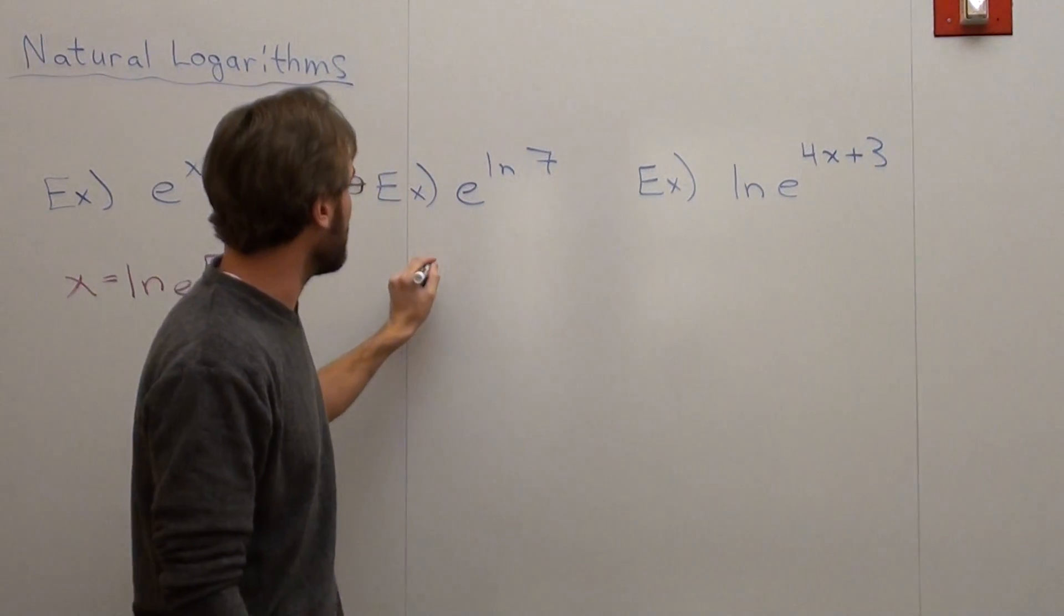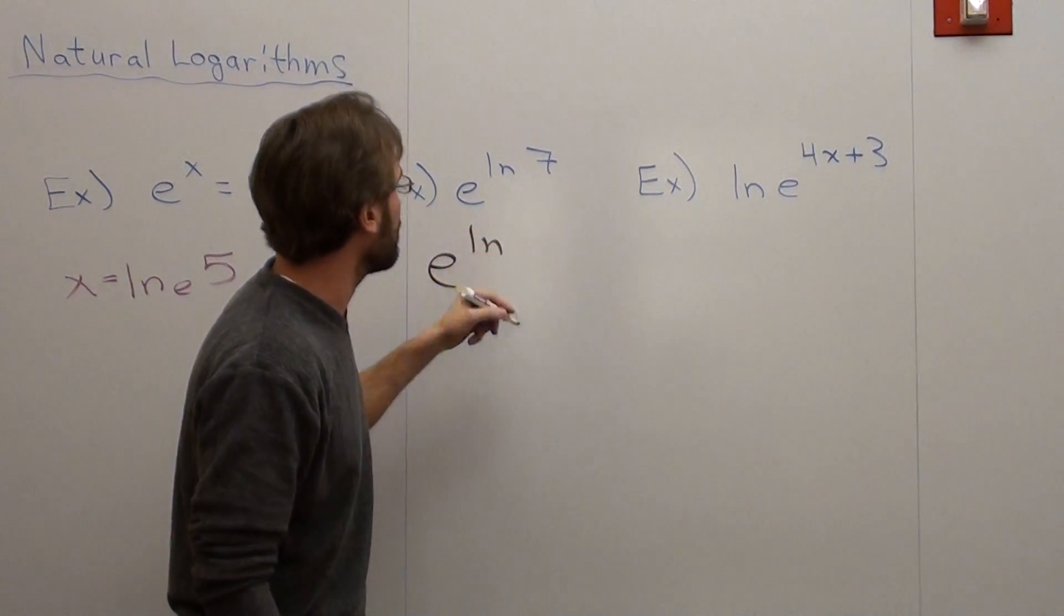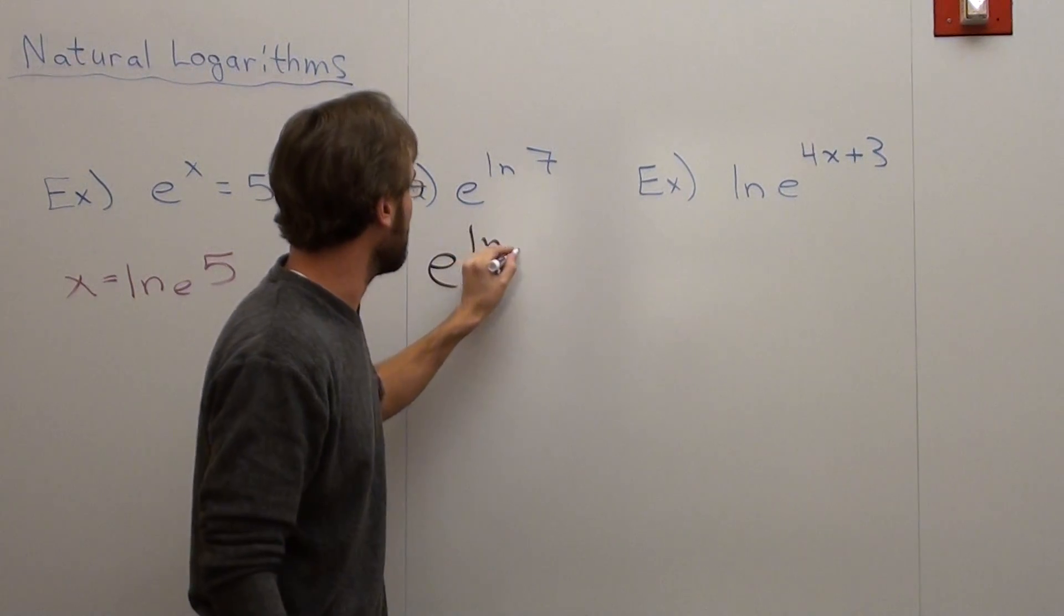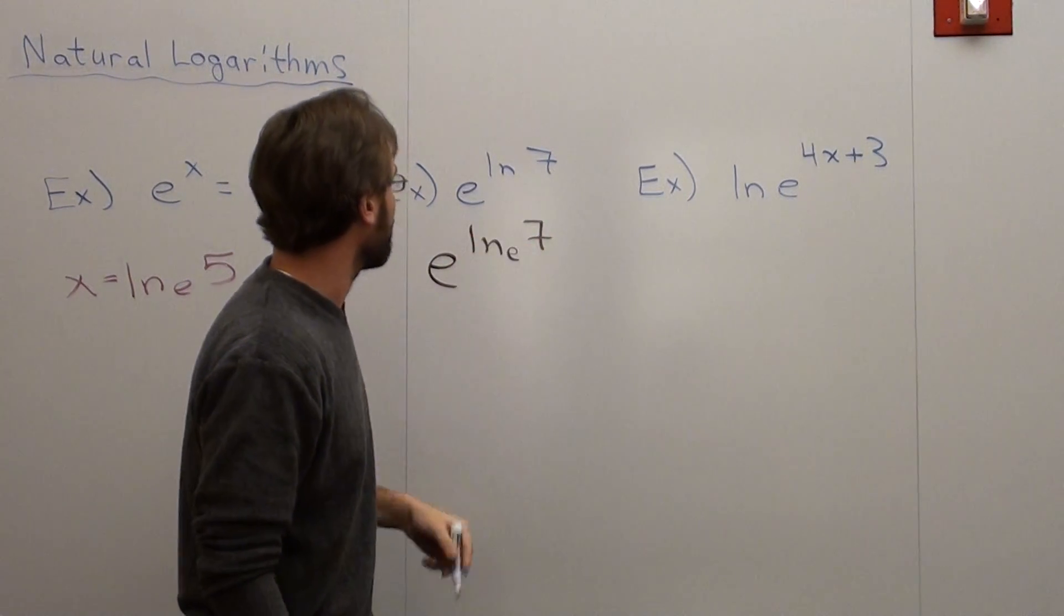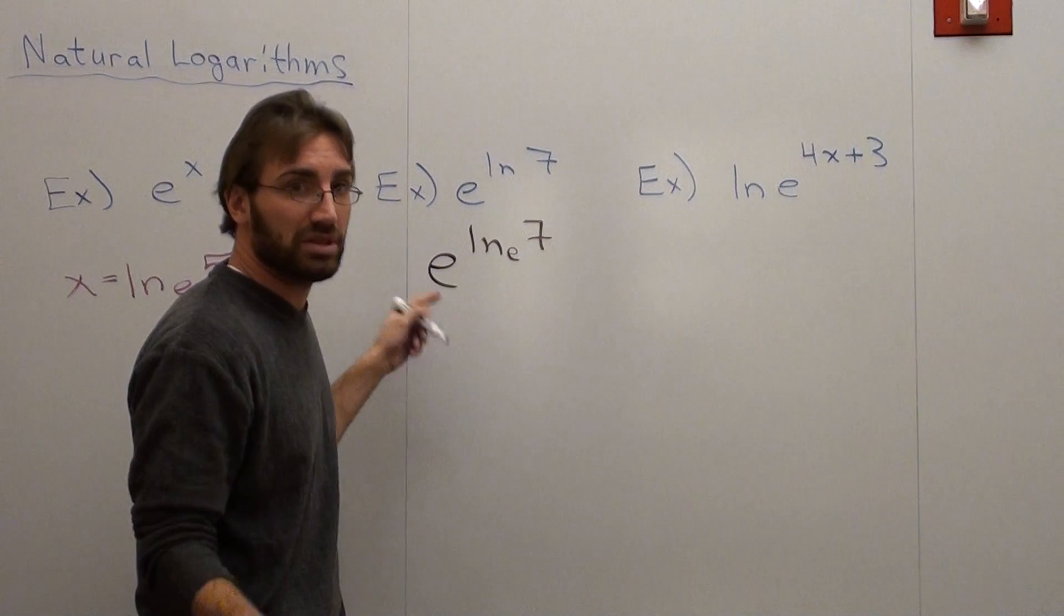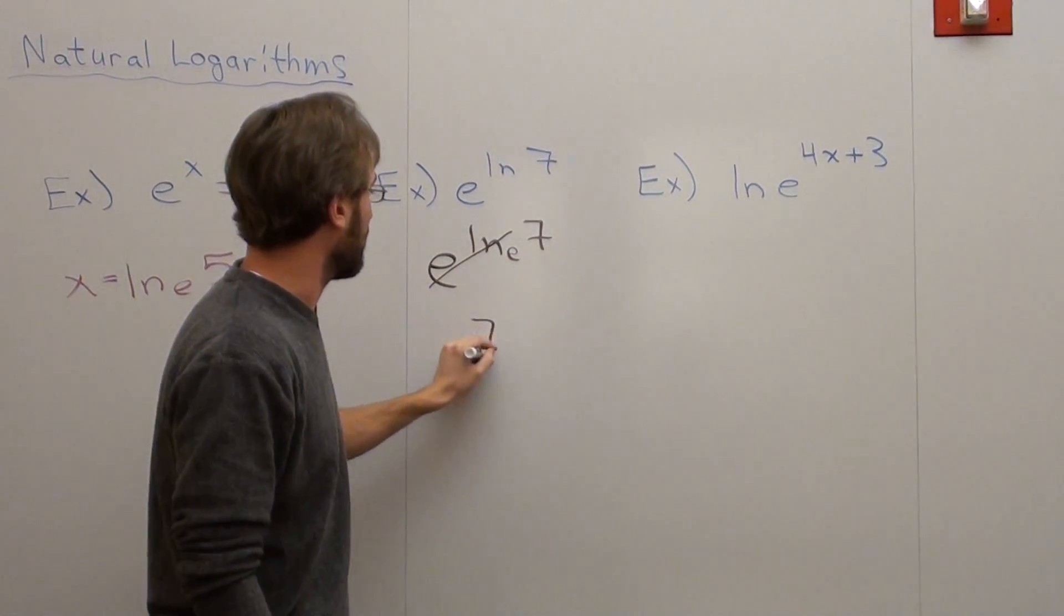In this case, I've got e to the natural log. Now, if you don't see a base, that's because the base is e of 7. These cancel. It's the same thing. They're inverses. And you're left with 7.